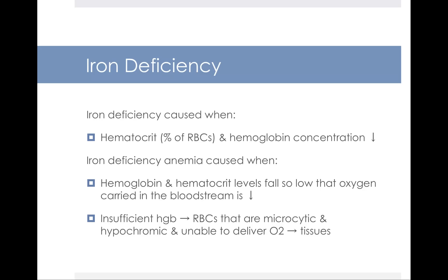Iron deficiency is caused when hematocrit and hemoglobin concentration dip. Hematocrit refers to the percentage of red blood cells in your blood, and hemoglobin is the hemoglobin content of your blood. Iron deficiency anemia is caused when your hemoglobin and hematocrit levels fall so low that oxygen carrying in your bloodstream is compromised and reduced.